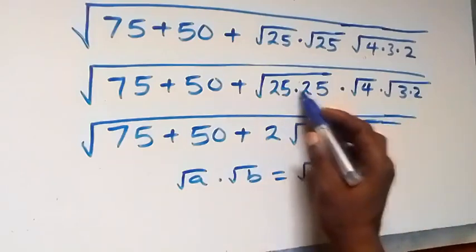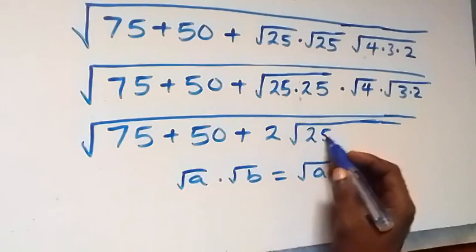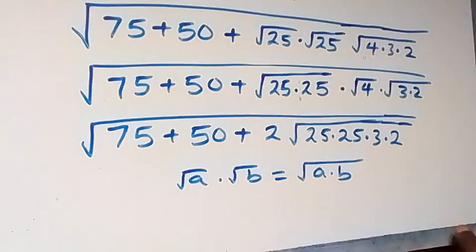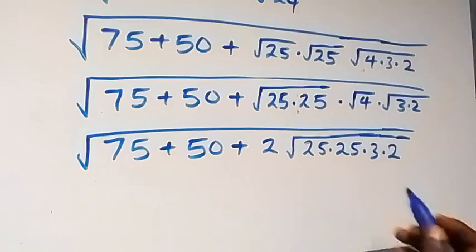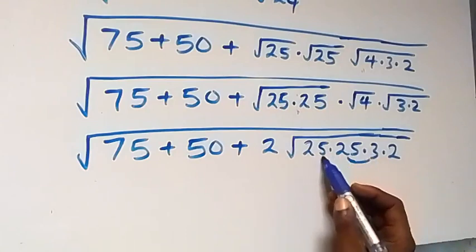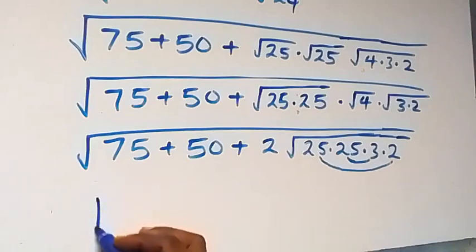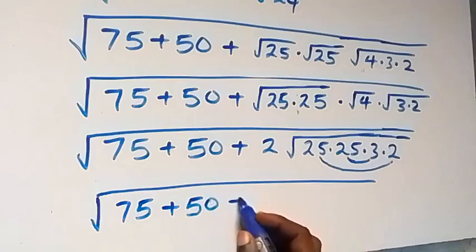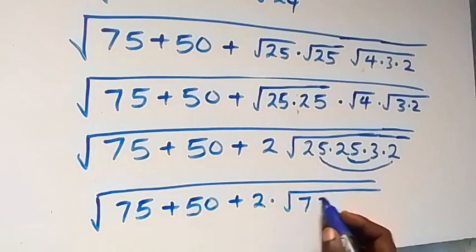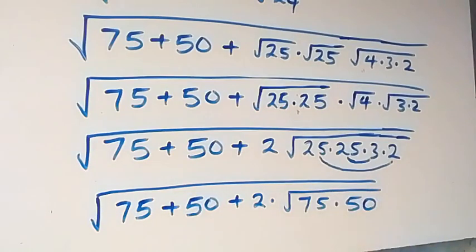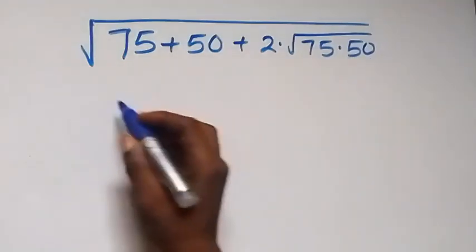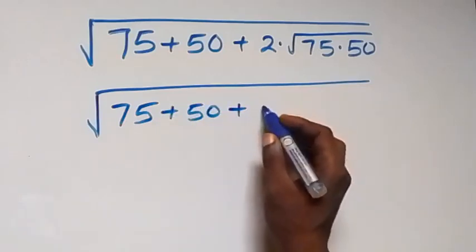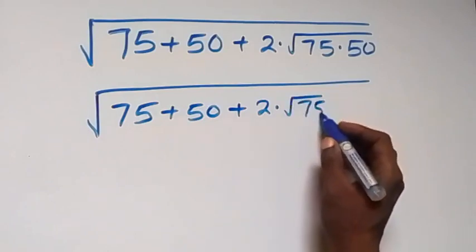Bringing everything together under one root, using root A times root B equals root AB: 25 times 3 gives 75, and 25 times 2 gives 50. So the expression becomes the square root of 75 plus 50 plus 2 times root 75 times root 50.